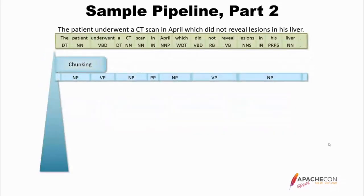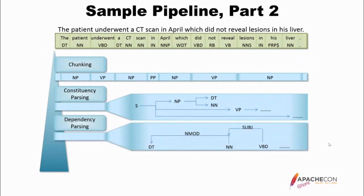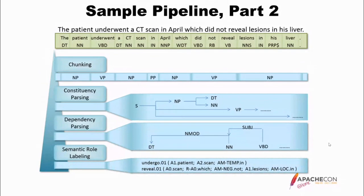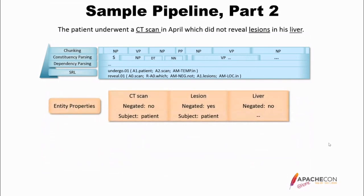The next thing we can do is chunk — basically putting together different parts of speech into chunks. Constituency parsing splits out a tree of all these things. Dependency parsing, much the same. And semantic role labeling. All of these things make it possible to get entity properties. For instance, the CT scan we can see is not negated and its subject is the patient. However, the lesions — if you look at the sentence, the CT scan did not reveal lesions, so the lesion was negated.